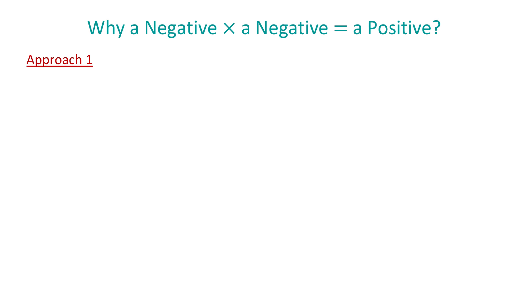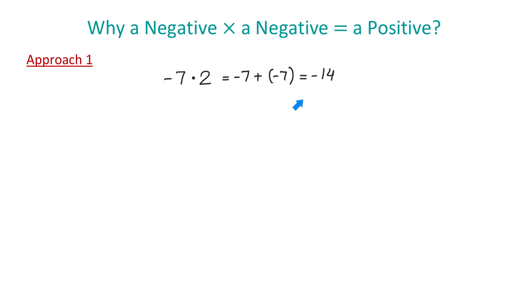First, let's say that we want to multiply negative 7 by positive 2. We can write this product as negative 7 plus another negative 7, because multiplying something by 2 means adding it twice. Then the result here will be negative 14. So, we can say that a negative multiplied by a positive is a negative.